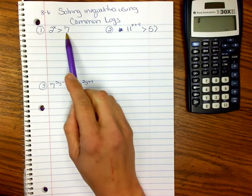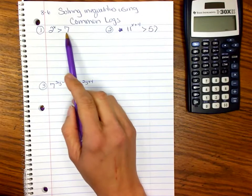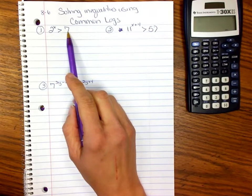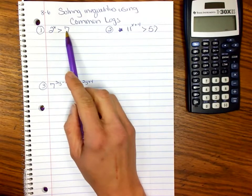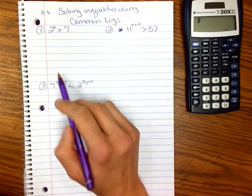Remember when we have some number raised to a power, like 2^x > 7, two to an integer power cannot equal 7. 2 to the third is 8, so we know x is going to be less than 3. But we use logs to solve this.